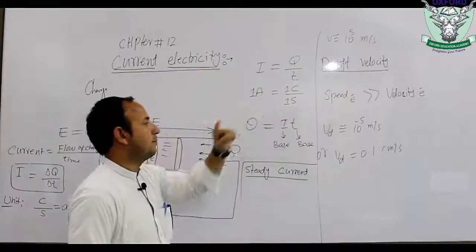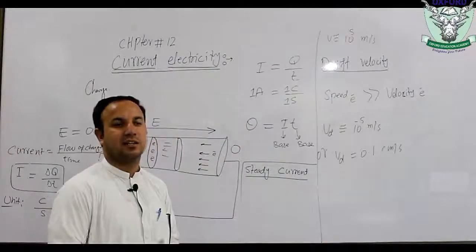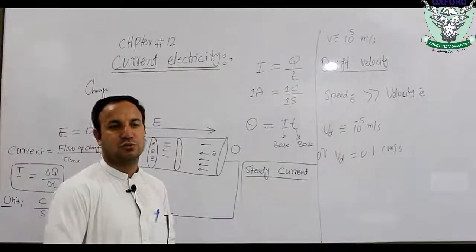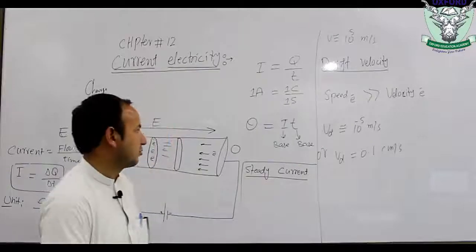The ampere is the base physical quantity for current. Smaller sub-units such as milliampere and microampere are also used depending on the scale of current being measured.